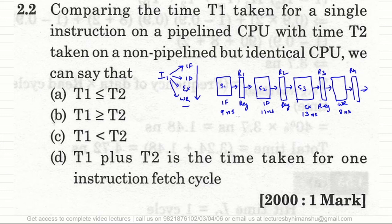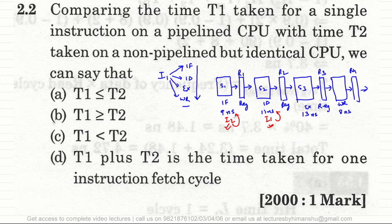Consider instruction i1 executing in stage S2 and instruction i2 executing in stage S1. i1 takes 11 ns and i2 takes only 9 ns, so i2 finishes earlier but S2 is not yet available. Therefore, i2 must be stored in the register for about 2 nanoseconds, which is why the inter-stage register with its 5 ns delay is needed as a buffer.